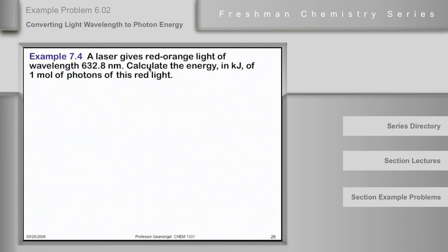A laser gives red-orange light of wavelength 632.8 nanometers. Calculate the energy in kilojoules of one mole of photons of this light.